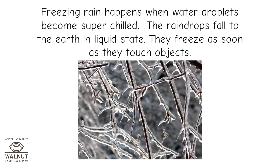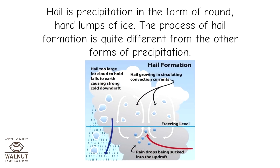Freezing rain happens when water droplets become super chilled. The raindrops fall to the earth in liquid state and freeze as soon as they touch objects. Hail is precipitation in the form of round, hard lumps of ice. The process of hail formation is quite different from the other forms of precipitation.